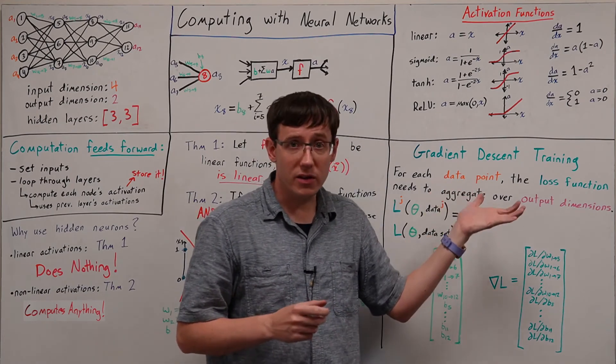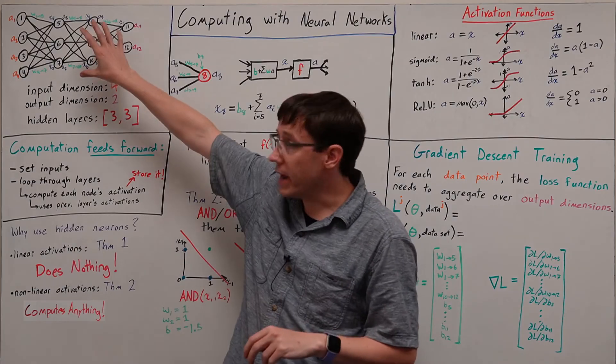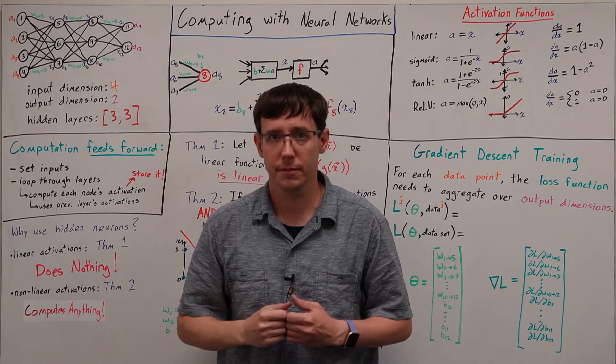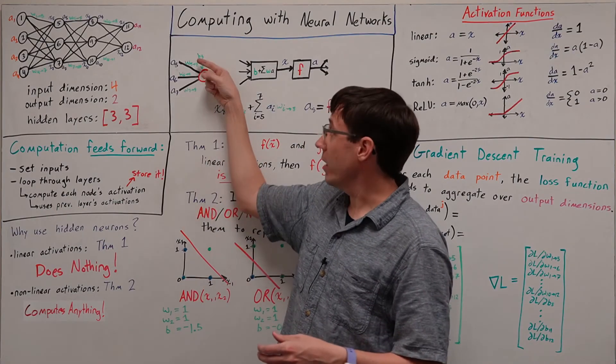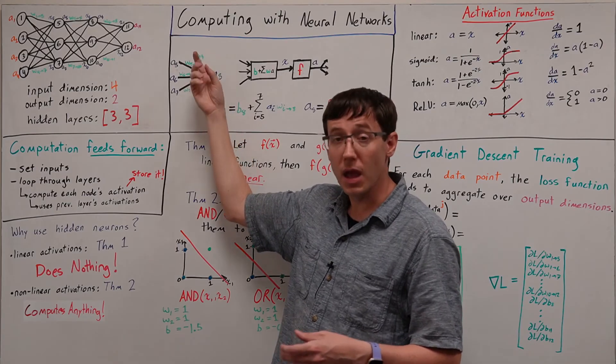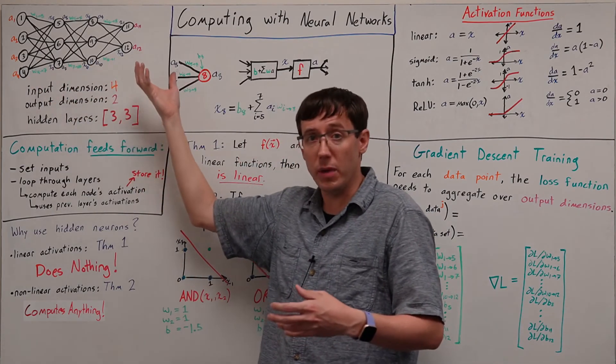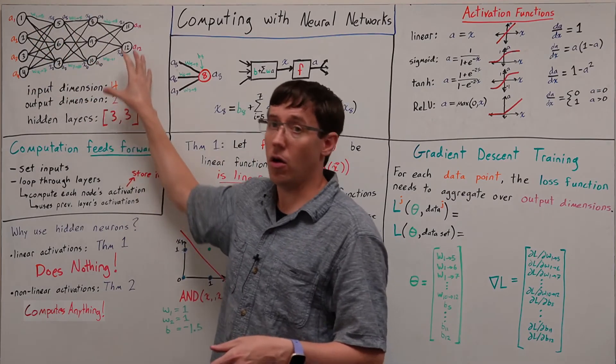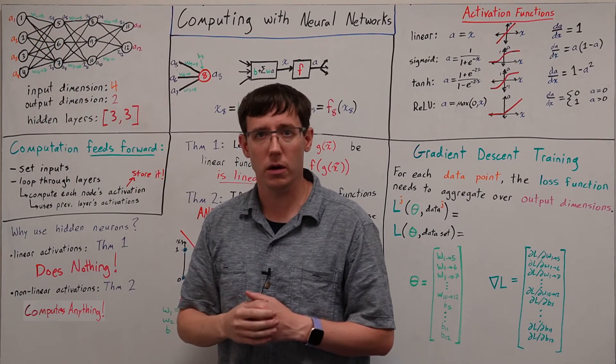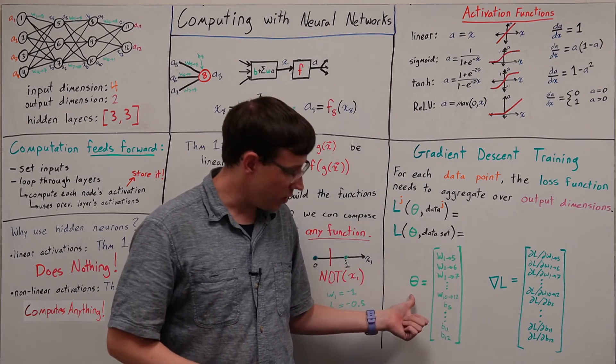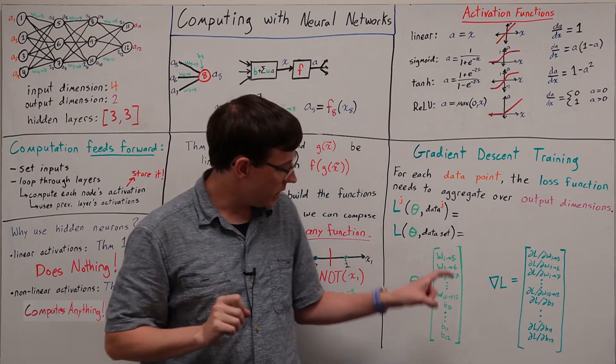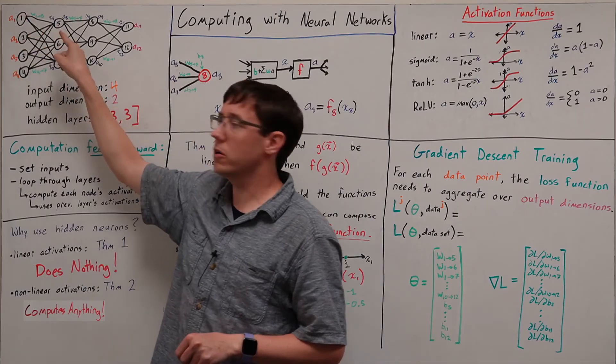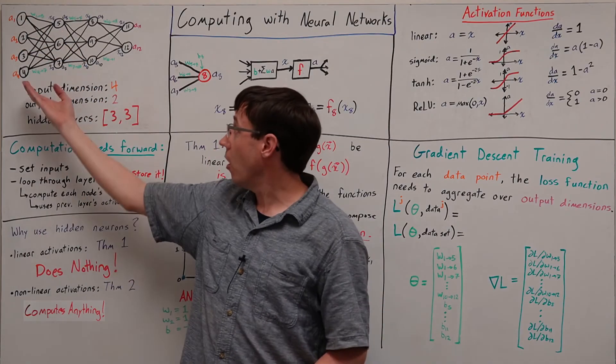So from here, we'd like to use gradient descent on some data set to train the parameters of the neural network so that it represents some interesting function. When we had a single neuron, our parameters were the weights and the bias. And now that we have a network composed of many neurons, the model's parameters are all of the weights and all of the biases in the entire network. So if we were to write down the parameter vector for this neural network, it would contain the weight from neuron 1 to neuron 5 and from neuron 1 to neuron 6 and so on for all of the weights.